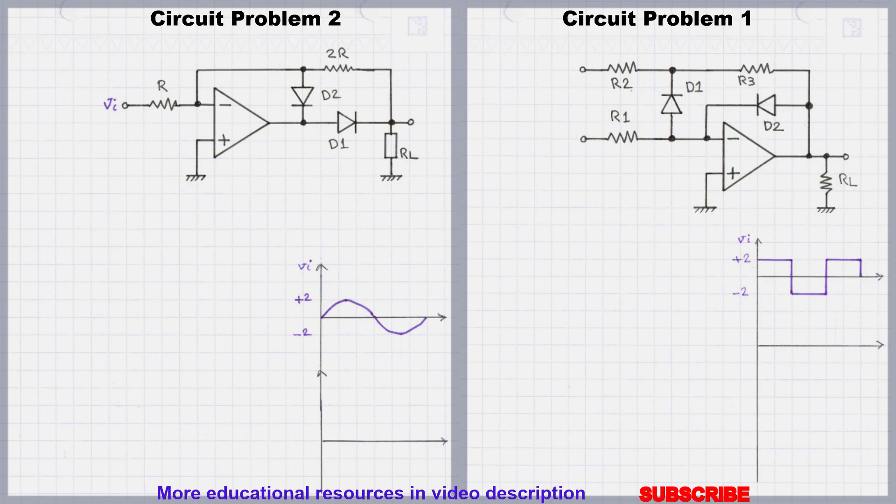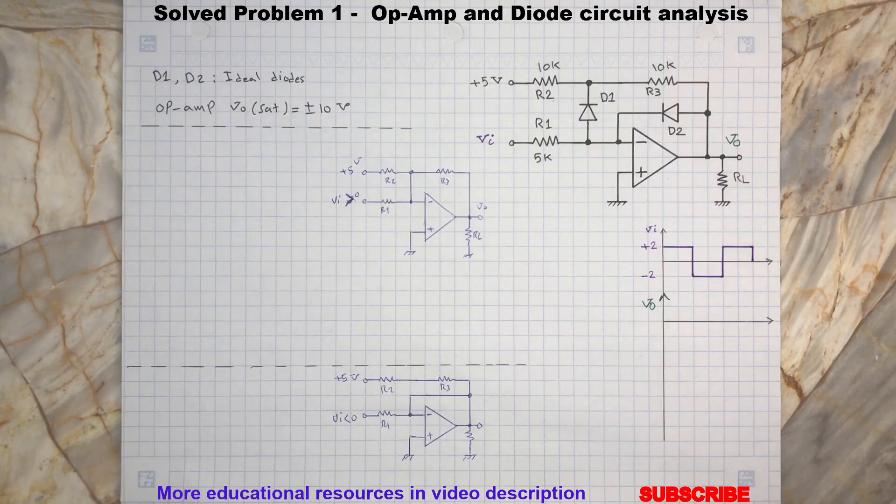Today we will review these two circuits. For both circuits, we assume that diodes are ideal and op-amp output saturation limits are at plus minus 10 volts.